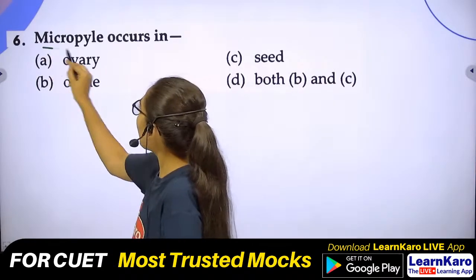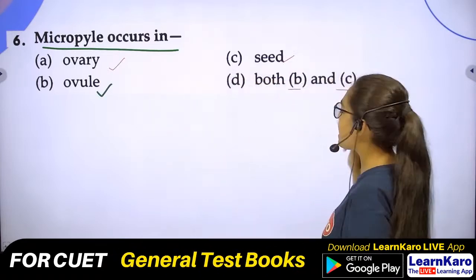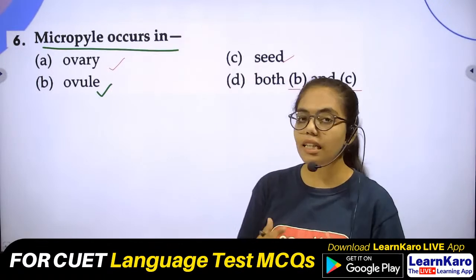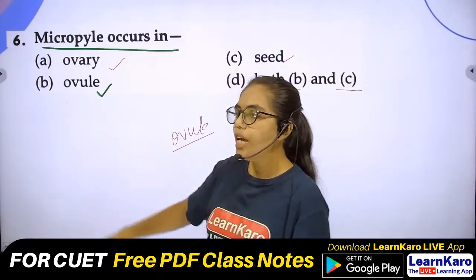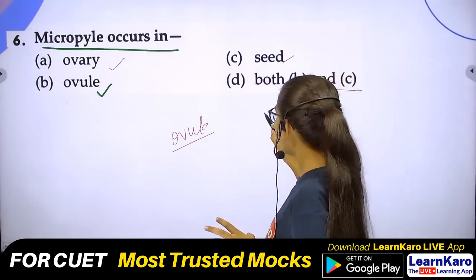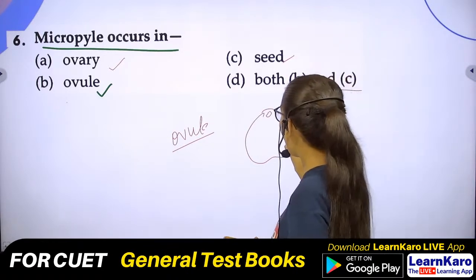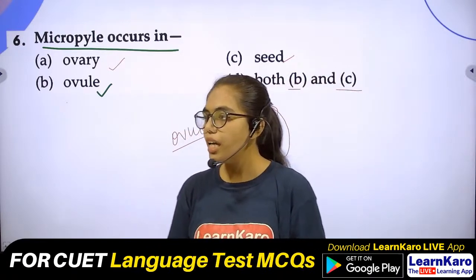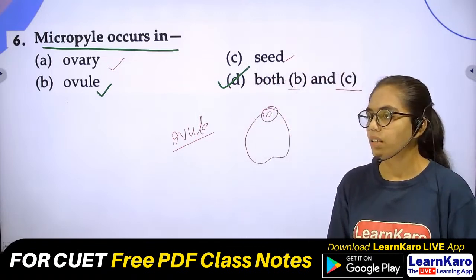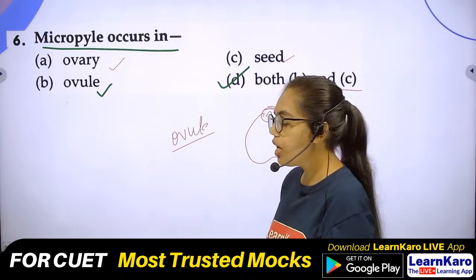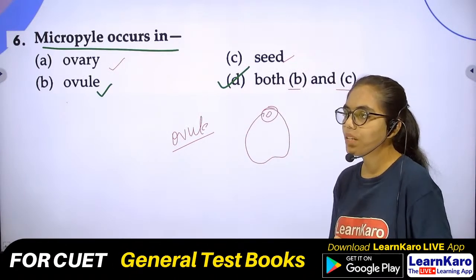Question number 6: Micropyle occurs in — Ovary, Seed, Ovule, or both B and C? Note carefully: micropyle is in the ovule, but on the seed there is also a small pore that represents the micropyle. So the correct answer is Option D — both seed and ovule.